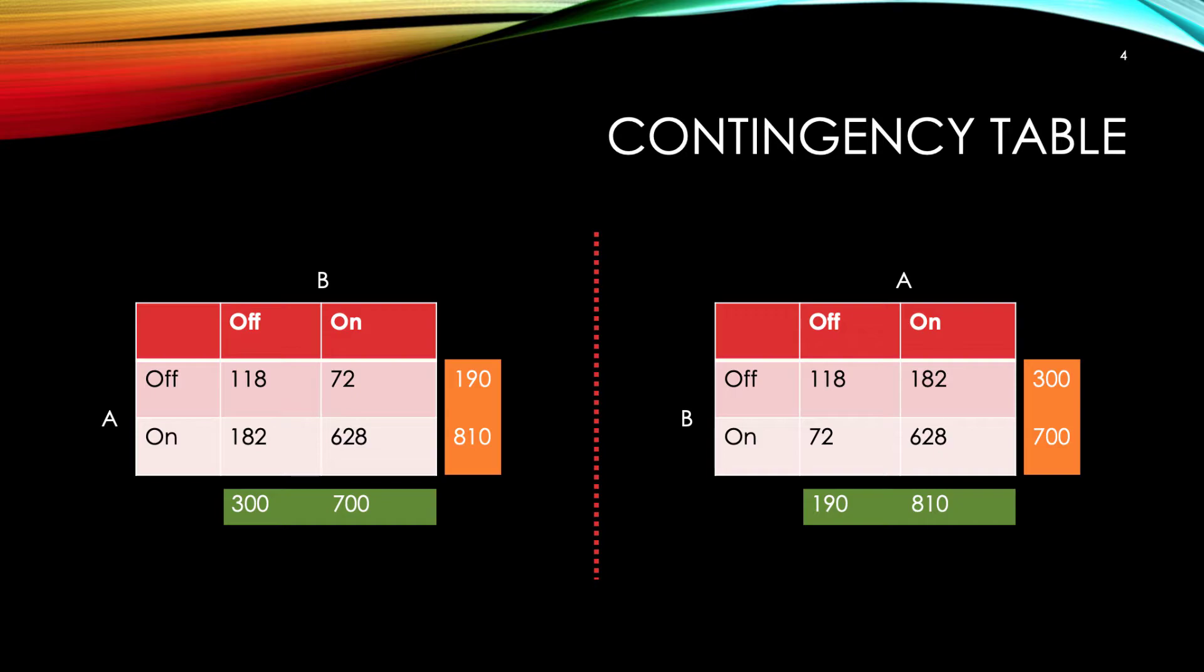Very important in a contingency table are the marginals. The marginals are not part of the contingency table, but rather derived by summing down the columns or across the rows. The marginals are also counts, but they summarize the counts for each row and for each column. The numbers in the green boxes are the column marginals. The numbers in the orange rows are the row marginals.